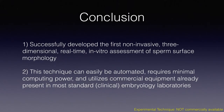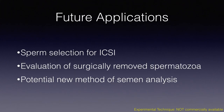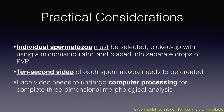In this proof of principle project, we have created the first non-invasive, three-dimensional, real-time, in vitro assessment of sperm surface morphology. This technique can not only be automated, it requires minimal computing power, and it utilizes equipment that is already in most standard embryology laboratories. Future applications of this experimental technique include using 3D sperm surface reconstruction to select sperm for ICSI for both ejaculated and surgically retrieved spermatozoa.